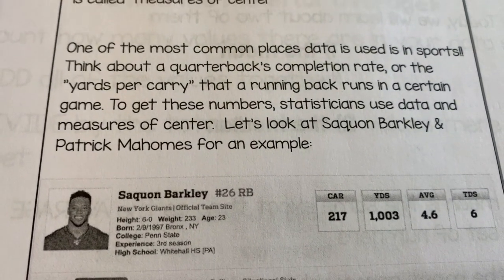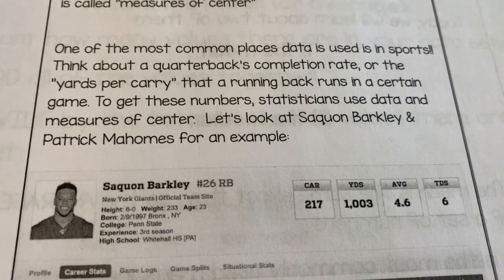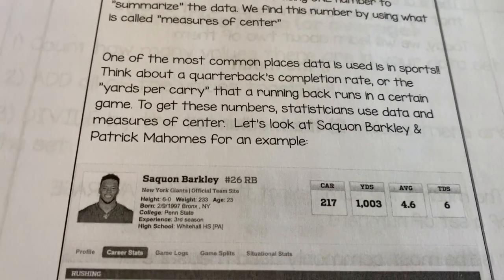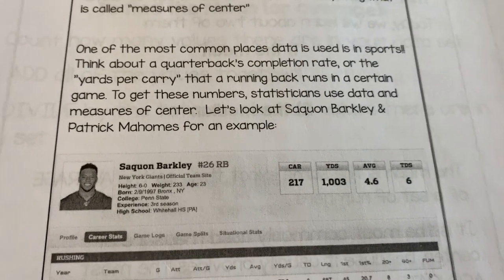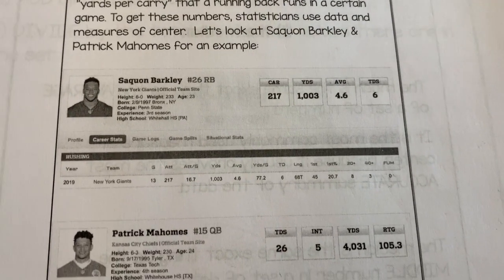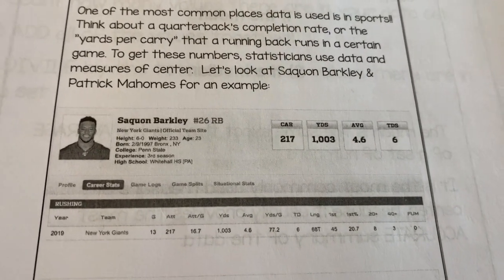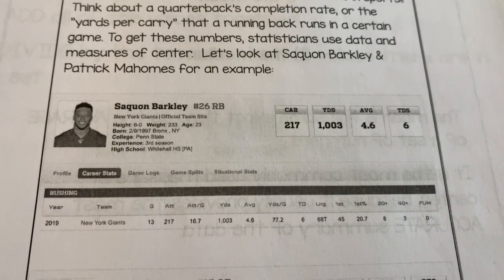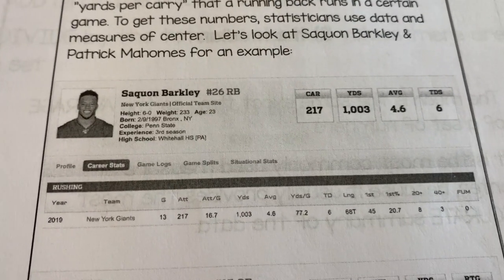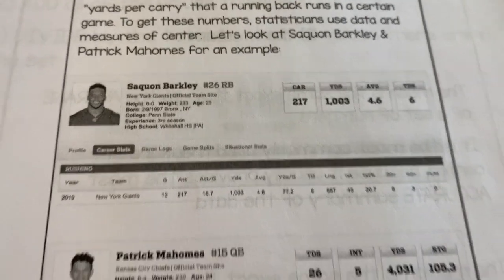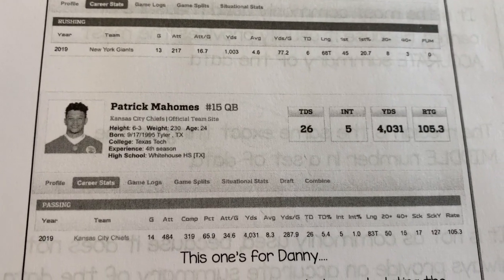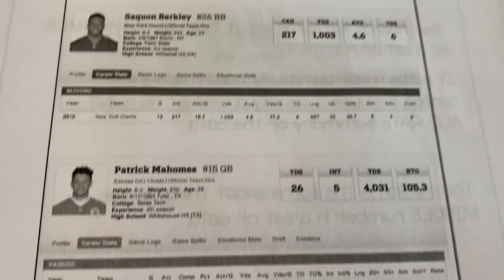One of the most common places data is used is in sports. Things like a quarterback's completion rate or yards per carry that a running back runs in a game — in order to get those numbers there are statisticians working non-stop using data and measures of center. What I've included here are Saquon Barkley and Patrick Mahomes. When you're watching a football game on TV, you'll hear commentators say yards per carry this game is 5.6, and with quarterbacks they always show a completion rate — how many passes attempted and completed.